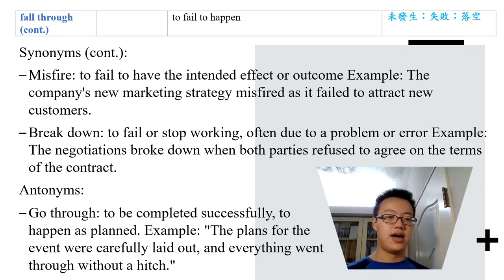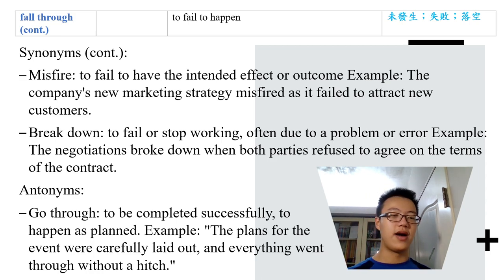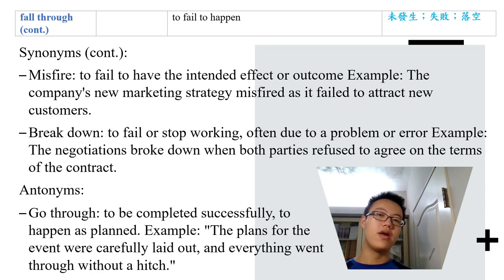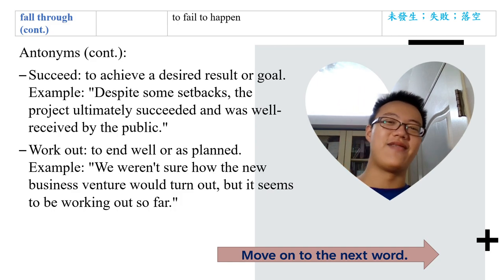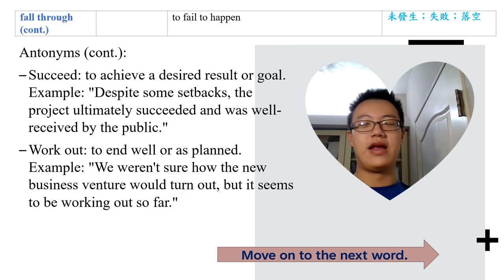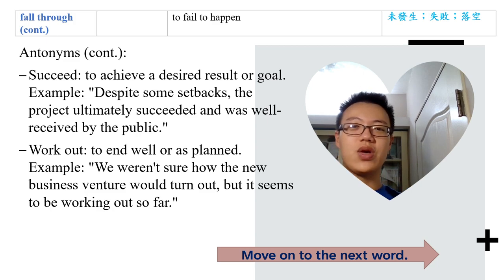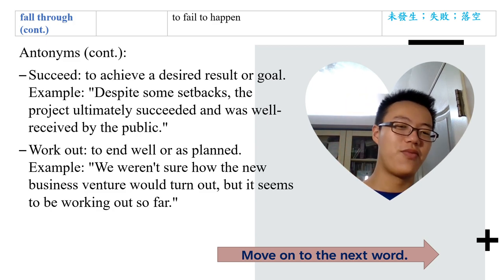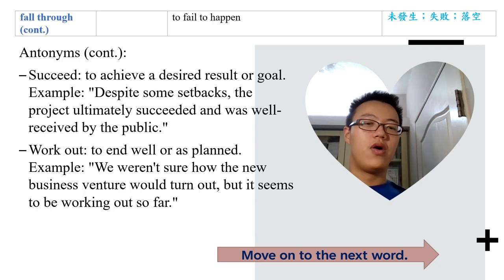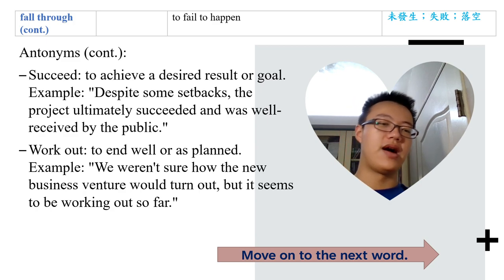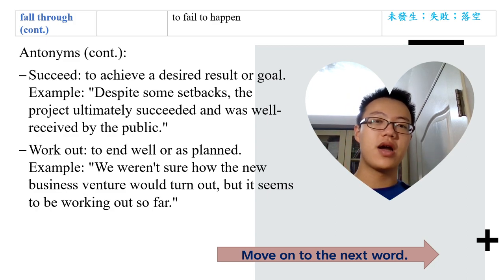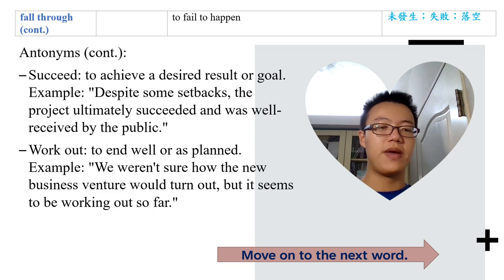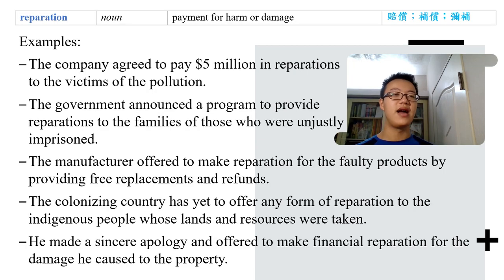Antonyms of fall through include: go through, succeed, and work out. 'Work out' means to end well or as planned. We weren't sure how the new business venture would turn out, but it seems to be working out so far. Hope you all can have your things work out for you this year.